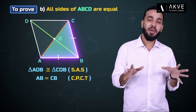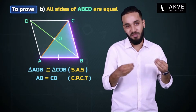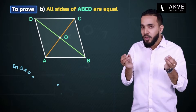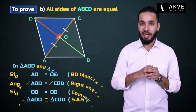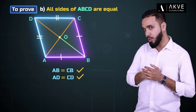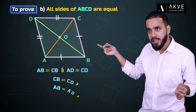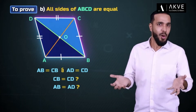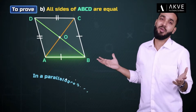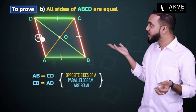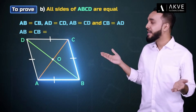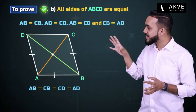We just proved that two sides of this parallelogram are equal. In the same way, we can prove that triangles AOD and COD are congruent, which implies AD = CD. So we have AB = CB and AD = CD. Using the property that in a parallelogram opposite sides are equal: AB = CD and CB = AD. Combining all pairs, AB = CB = AD = CD — we proved all sides are equal.